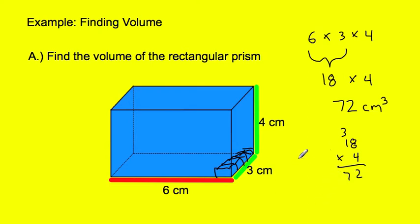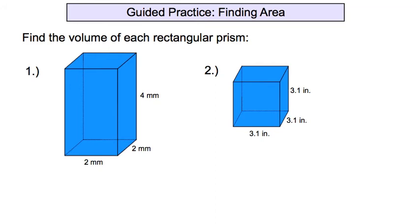The other way to write that would be 72 cubic centimeters. So that's the example. And today it's just going to be more of the same, multiplying, multiplying, multiplying.